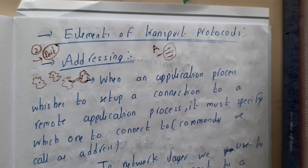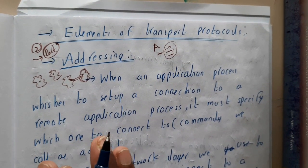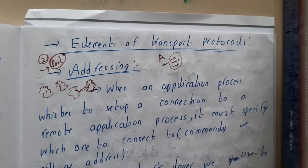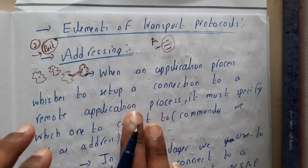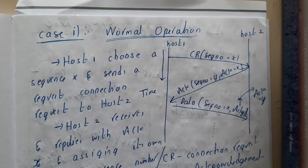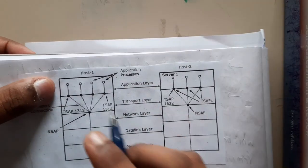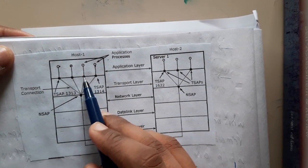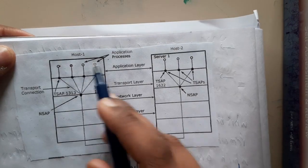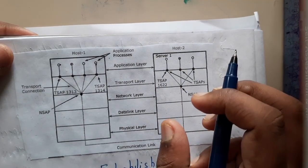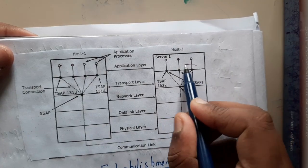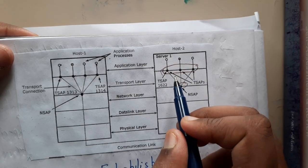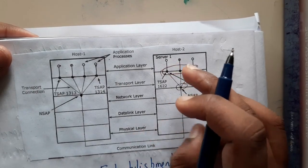There could be multiple applications in your system. For example, one application could be using port 8080 and in another system that port could be taken by some other application. Assume that here are your four applications inside your network, and one application is trying to send data to another. If you use only the network layer, you can reach the network but you don't know which application to send to.